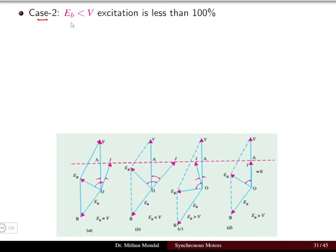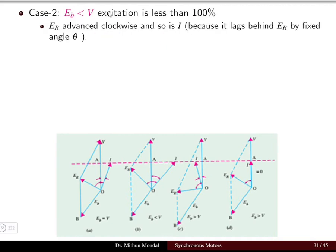Case two is when the motor is operated under the under-excitation case, where the value of Ev is less than V — excitation is less than 100%. So under this condition, excitation has reduced below the normal 100% level. Here, the resultant EMF advances in the clockwise direction. Comparing to case one (normal excitation), in the under-excitation case the resultant EMF Er has rotated in the clockwise direction.